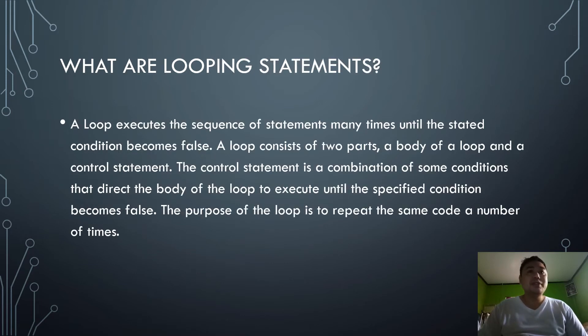So what are the looping statements? A loop executes the sequence of statements many times until the stated condition becomes false. A loop consists of two parts: a body of a loop and a control statement. The control statement is a combination of some conditions that direct the body of the loop to execute until the specified condition becomes false. The purpose of the loop is to repeat the same code a number of times.